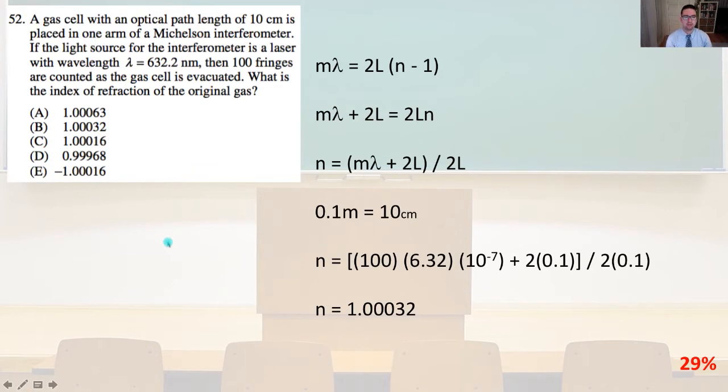Number 52, a gas cell with an optical path length of 10 centimeters is placed in one arm of a Michelson interferometer. If the light source for the interferometer is a laser with wavelength lambda equals 632.2 nanometers, then 100 fringes are counted as the gas cell is evacuated. What is the index of refraction of the original gas?